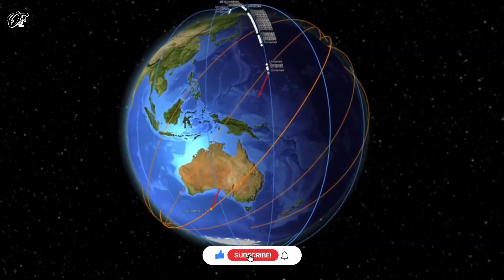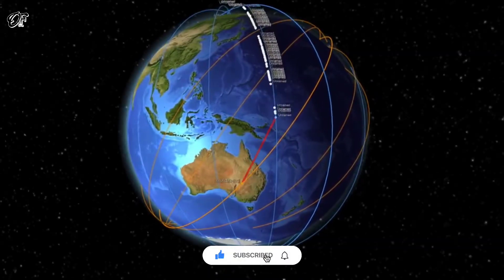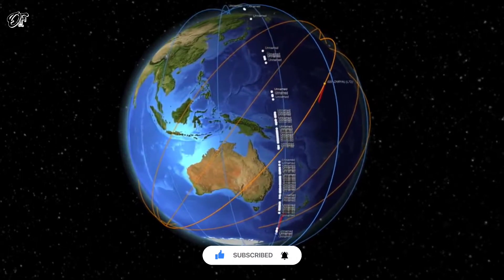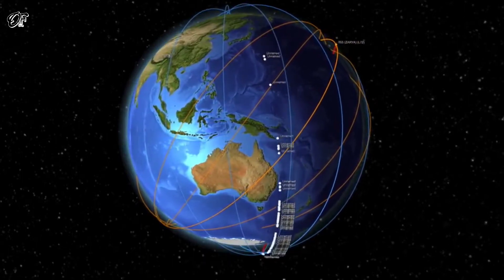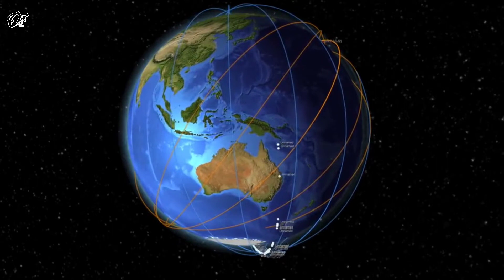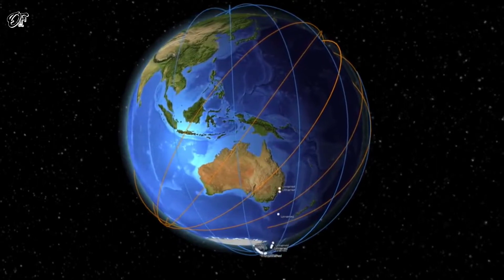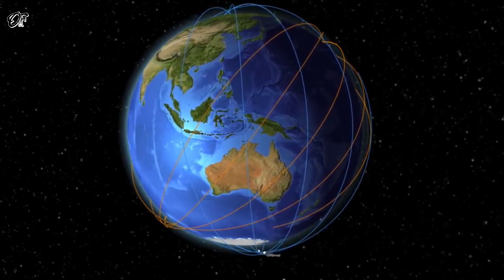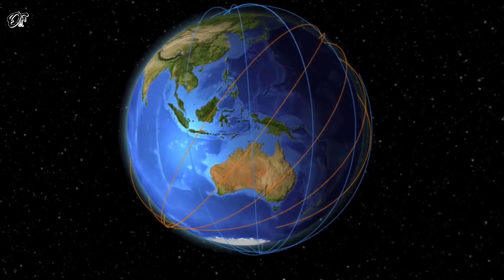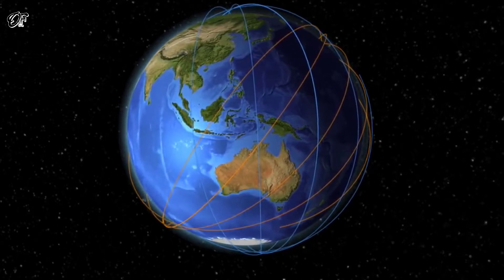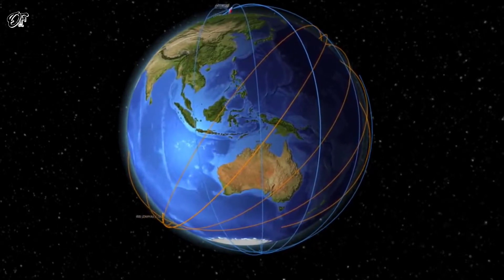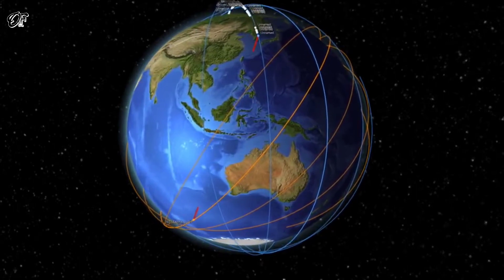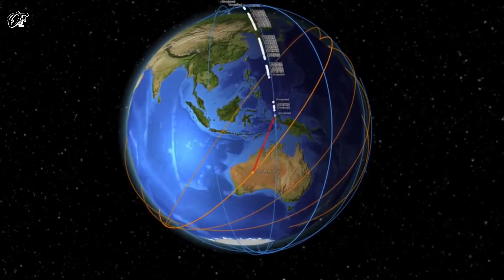One fun and interesting thing to explore on the LEO Labs platform is the visualization of all the objects we are tracking in low Earth orbit. The link is in the description — you can see a stream of the locations of roughly 14,000 objects over the past 24 hours. In the menu on the upper left of the screen, you can choose the playback speed and selectively display objects by name, country of origin, altitude, and other criteria.